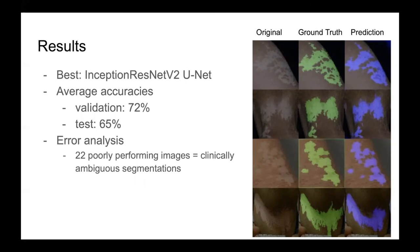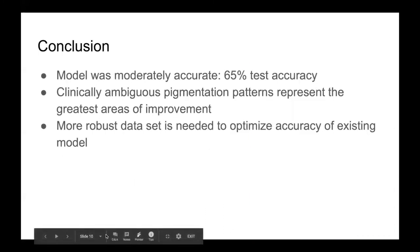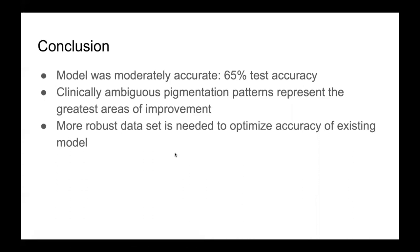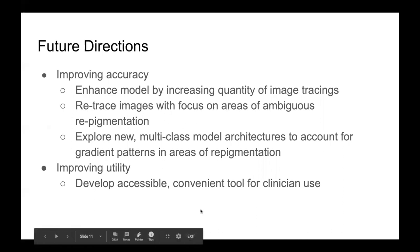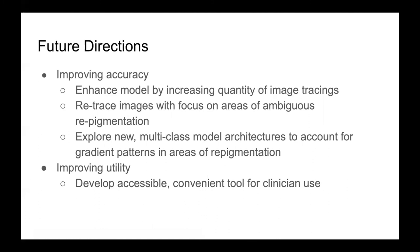For instance, you can see a version of that in the second image from the top. Overall, our existing model was moderately accurate with a test accuracy of 65%. The 22 worst-performing images were those with clinically ambiguous patterns of re-pigmentation. These images represent our greatest areas of improvement, and we believe a more robust dataset is needed to improve test accuracy. Our first future goal is to improve accuracy by increasing the number of image tracings used to train the model, and to retrace current images with a focus on areas of ambiguous re-pigmentation. We also seek to explore new multi-class model architectures to account for gradient patterns in areas of re-pigmentation.